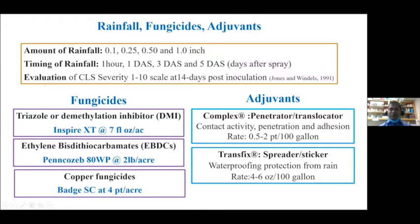We used three different types of fungicide: from the Faisal Group, we used Inspire XT; from the EBDC Group, we used Pencogep; and from copper fungicide, we used Badge SC. We used two different kinds of adjuvants: Complex and Transfix. Complex is especially known for its penetrating and transmitting activity. Transfix is mostly a spreader or sticker that has waterproofing protection from rain. In the greenhouse, we sprayed fungicide or fungicide-adjuvant mixture followed by rainfall simulation at different amounts and different times.